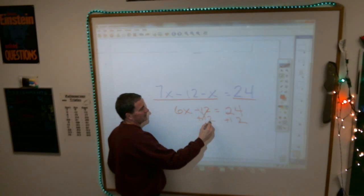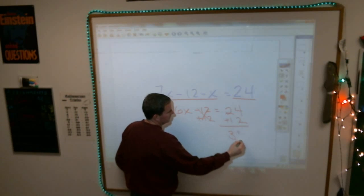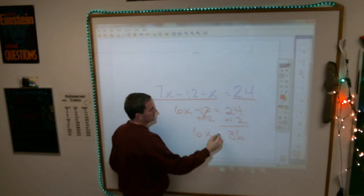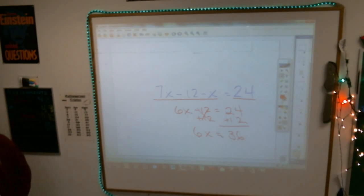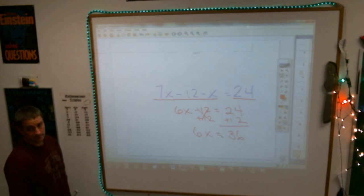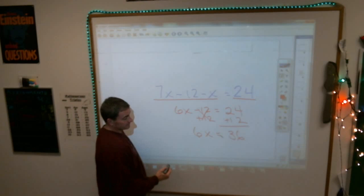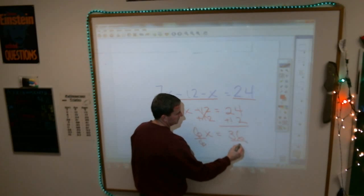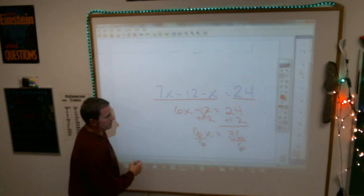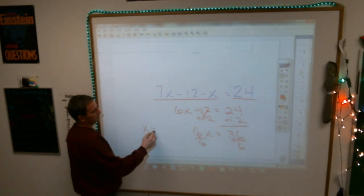When you add 12, I end up now with a 36 and a 6x equaling 36. And as previously stated, generally the last thing we do is, Delaney? You get rid of this by dividing it out on both sides. So your letter x should equal 6.